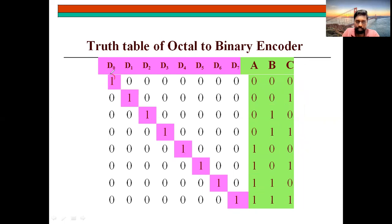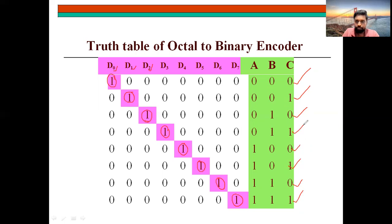For each and every input combination where one is selected, you will have its own particular binary output. D0 activated means the zero binary format triple zero will be at your output. D0 means the index value is zero, so zero in binary format is triple zero. When D1 is the second input, index value is 1, so binary of 1 is 001. For D2, index value is 2, so 010 is taken at output. For each and every input, their respective index values are converted into binary form — that is your encoder.